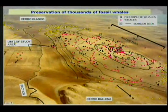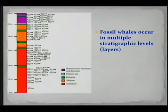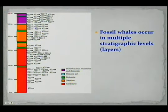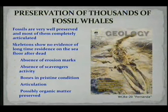The whales occur in multiple layers — remember that, because these hills consist of multiple layers. This diagram shows the thickness of the entire formation: basically 600 meters. That hill you were seeing is about this thickness — it's up here in the sequence, and you can see there are plenty of fossil whales in multiple layers.